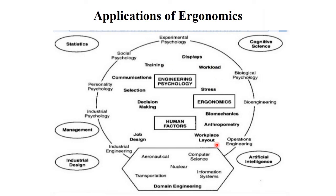Applications of ergonomics span different multidisciplinary fields of human-computer interaction. All fields where ergonomics concepts are used include domain engineering — aeronautical, transportation, nuclear, computer science, and information systems. Engineering psychology and human factors include communication, decision making, job design, and workplace layout. Industrial engineering, industrial psychology, personality psychology, social psychology, experimental psychology, biological psychology, bioengineering, operations engineering, industrial design, management, statistics, artificial intelligence, and cognitive science are all included. Ergonomics is applied everywhere.